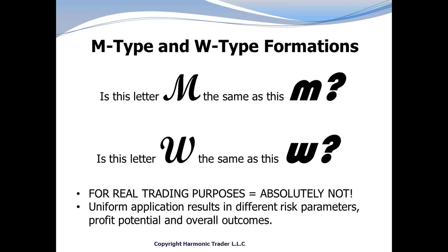M and W type formations. Essentially, what we're looking at are two M and W type formations that may seem to be the same but actually are not. Is this letter M the same as the other M? Is this letter W the same as the other W? When we're actually measuring price levels and trying to optimize which area to enter a trade for real trading purposes, these are not the same. Uniform application results in different risk parameters, profit potential, and eventual overall outcomes.